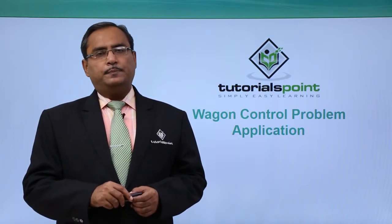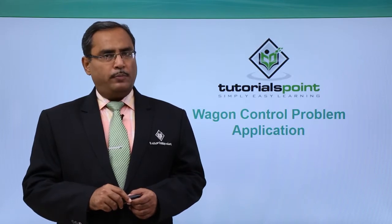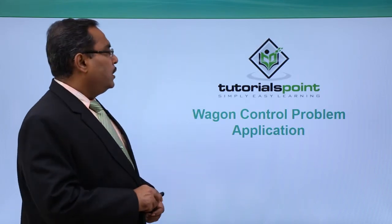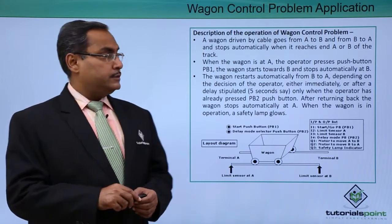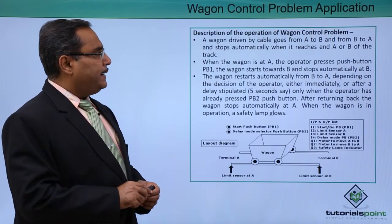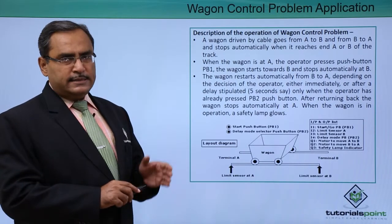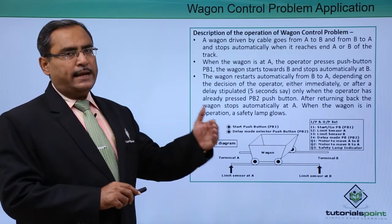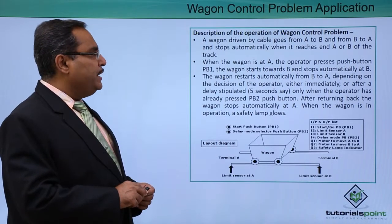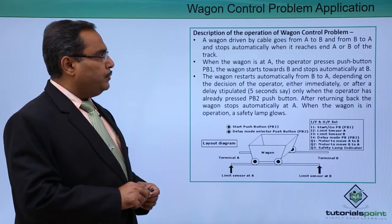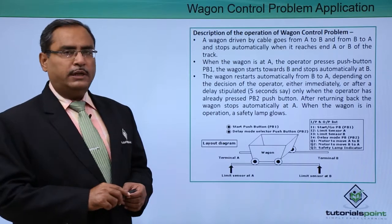We are going to discuss another PLC application: the wagon control problem. Let us go for the problem description first. A wagon is driven by a cable going from A to B. Station A is one place and station B is another place. The wagon travels from station A to station B and back again, stopping automatically when it reaches end A or B of the track.